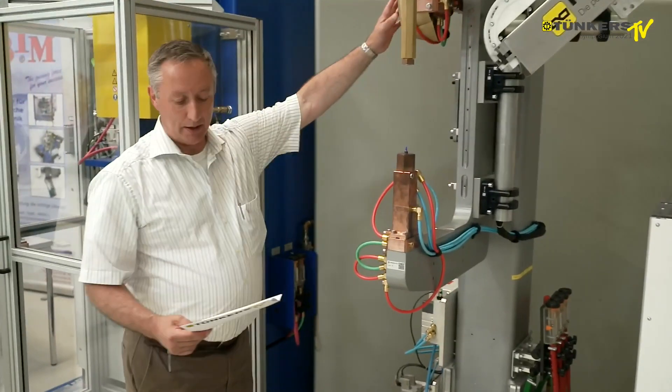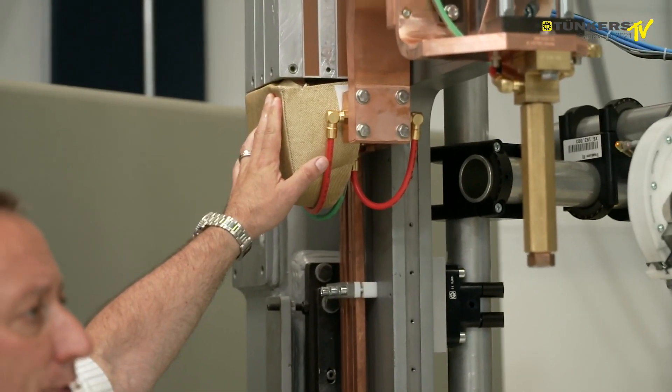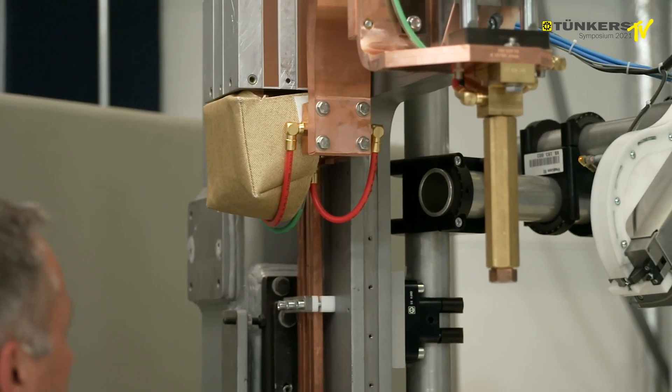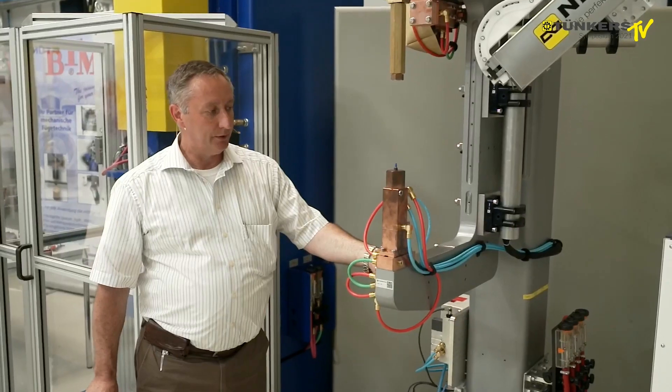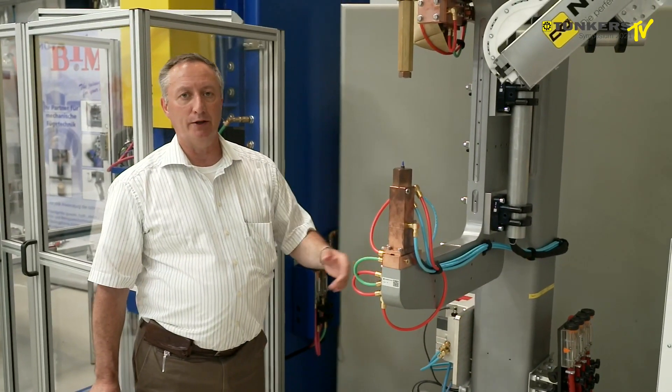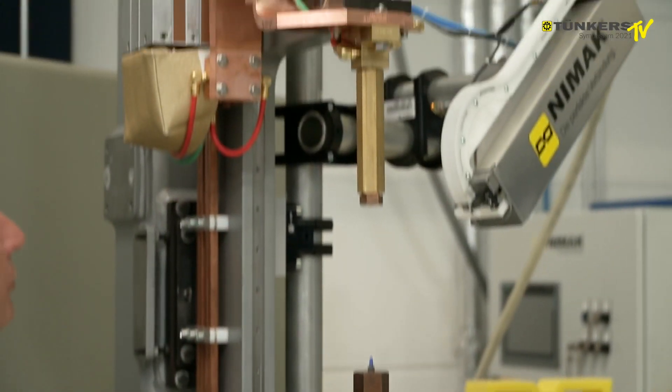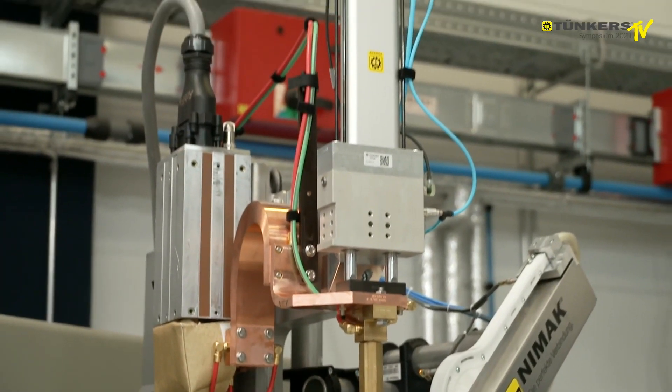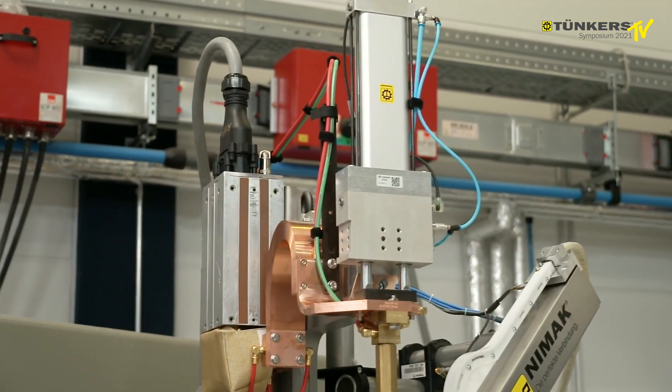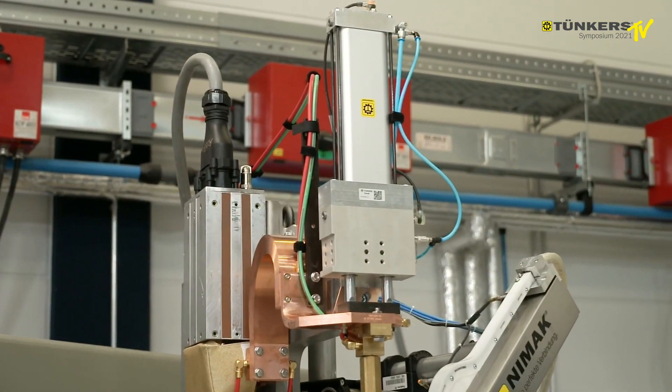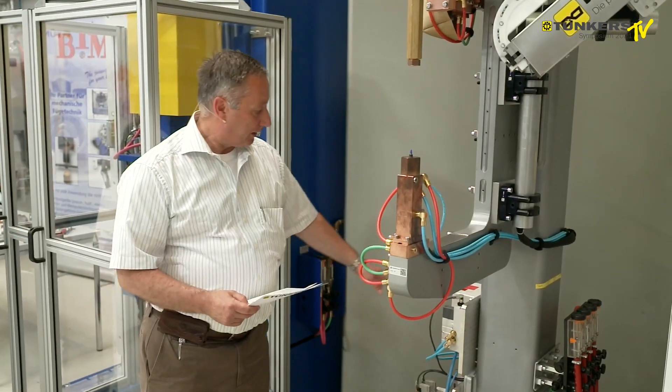We've got the following assemblies here. We've got the MF welding transformer Niemak product with a short distance, provides a welding current to the electrode. We've got the Tunkers multi-force cylinder, which allows us to have high welding forces processes with very low air consumption.